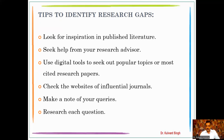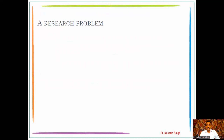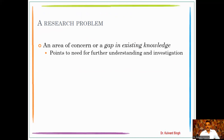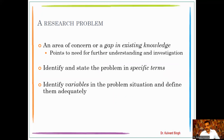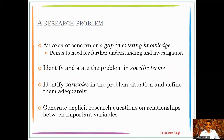This practice of finding the research gap leads to defining the research problem. A research problem is an area of concern or a gap in existing knowledge that points to the need for further understanding and investigation, or it may be a scope for further research. Identify and state the problem in specific terms, identify variables in the problem situation and define them adequately, and generate explicit research questions on the relationship between the important variables.